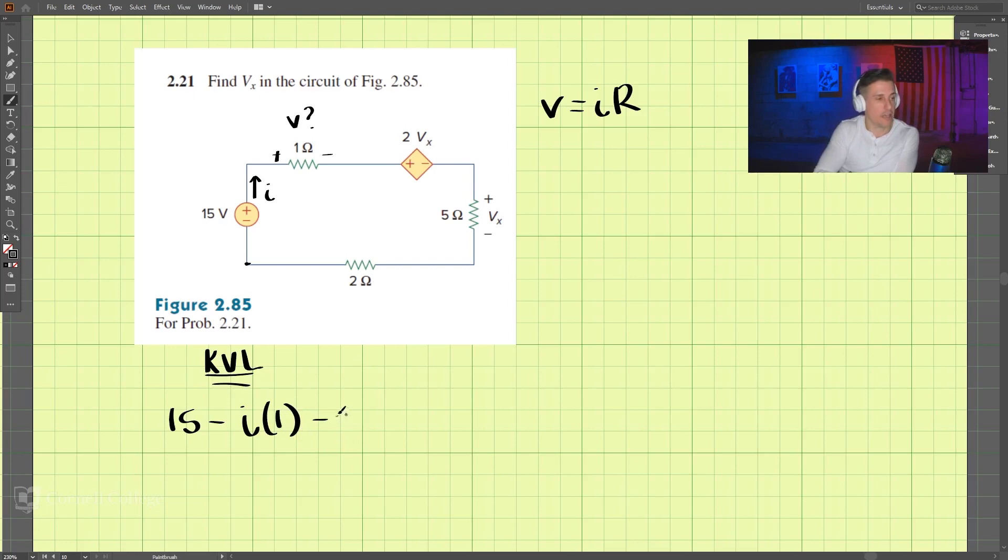Okay, minus 2Vx minus Vx minus I times 2, and that is equal to 0.